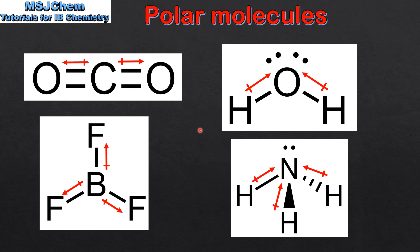And finally we look at two examples of polar molecules, that's H2O and NH3. H2O is a polar molecule because of the presence of polar bonds. Another reason is the molecular geometry which is bent or v-shaped. The bond polarities do not cancel out and the molecule has a net dipole moment.